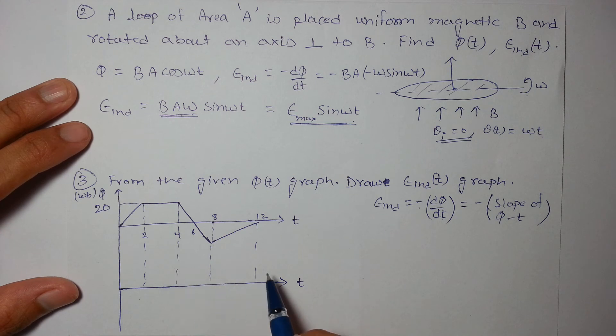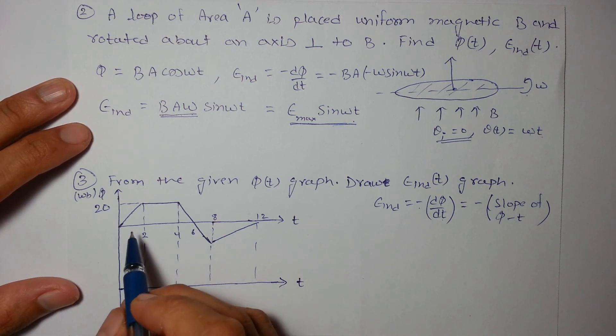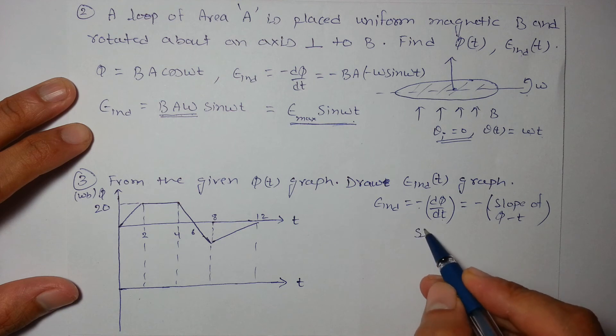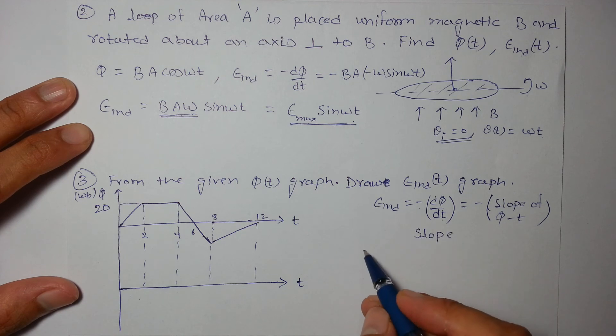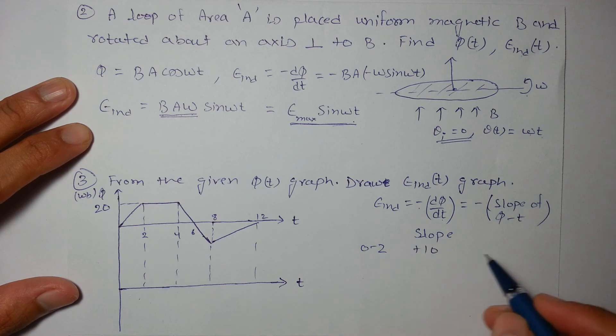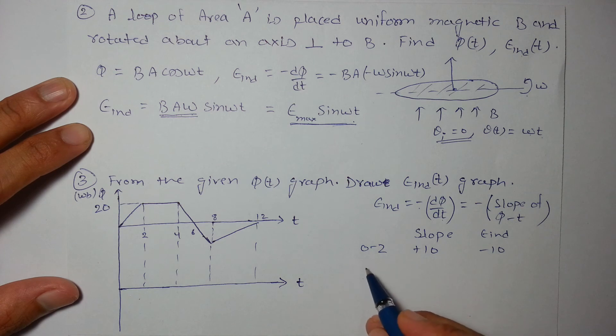So what we'll do: we'll take out the slope from 0 to 2. I am writing slope and range. From 0 to 2 the slope is +10, so EMF induced will be -10. From 2 to 4 slope is 0, so it will be 0.